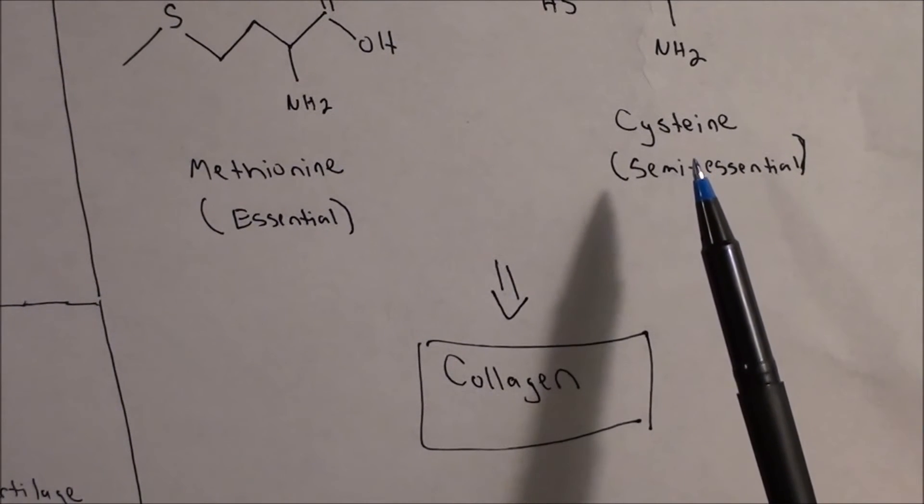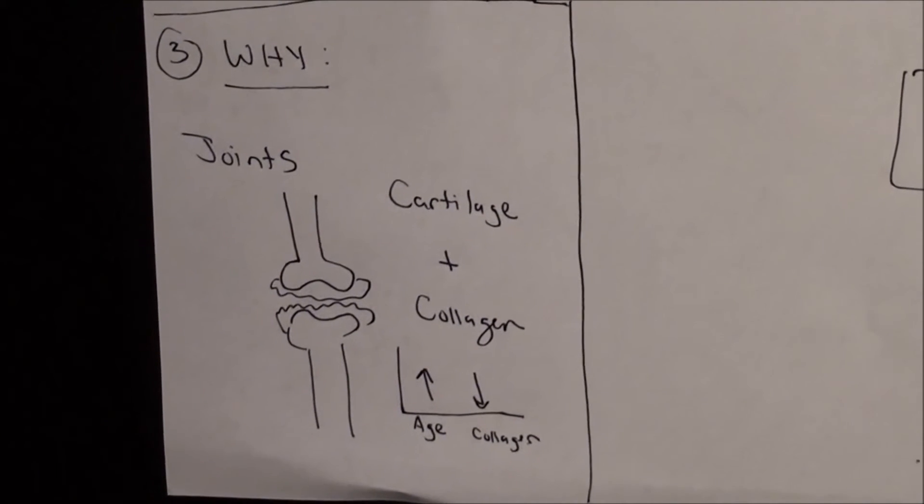Cysteine is one of the beginning building blocks for that. And in the context of runners, why that's important is, as we've talked about in our chondroitin video and our glucosamine video...